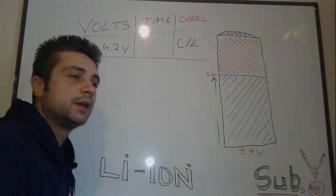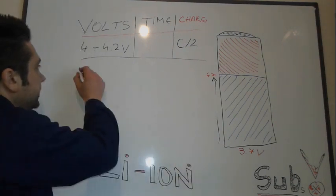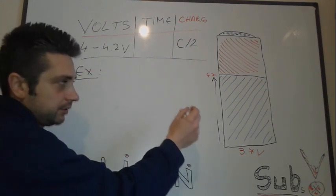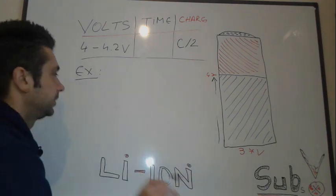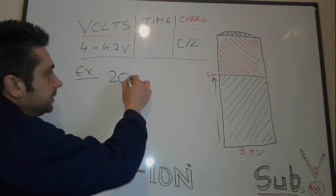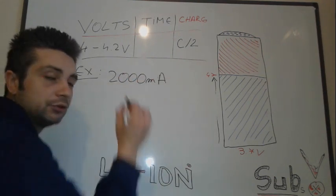Let's make an example first and then you're gonna get the point. So you remember the thing: constant current and then constant voltage. Let's say we have a battery that has the capacity of 2000 milliamps.